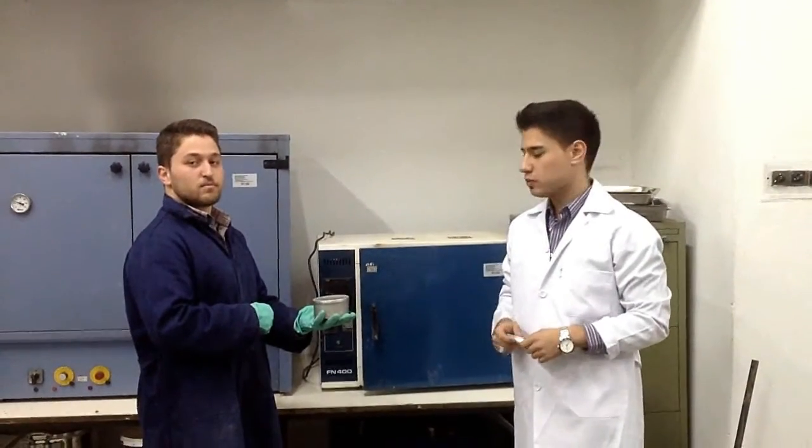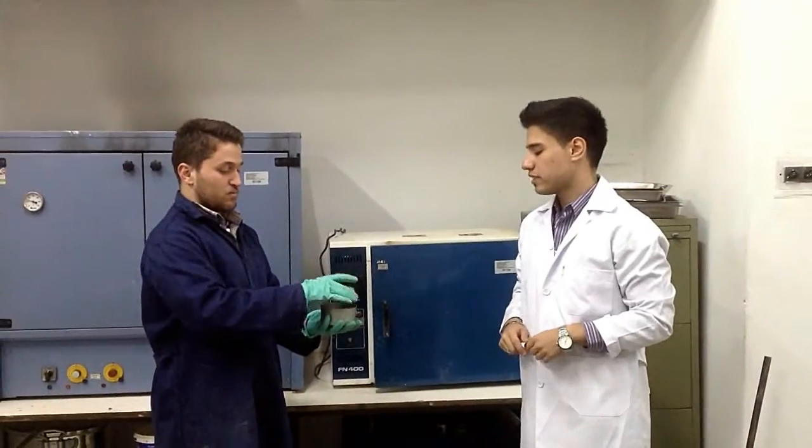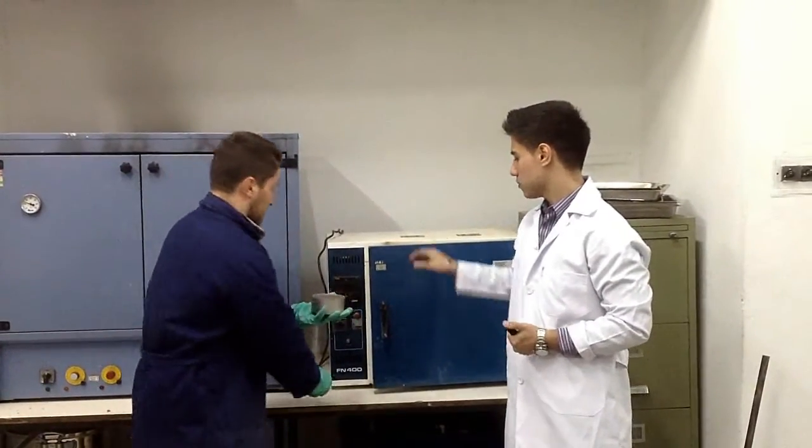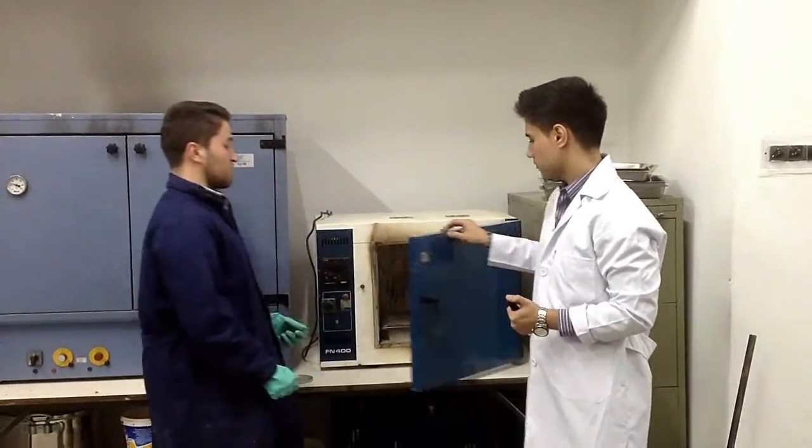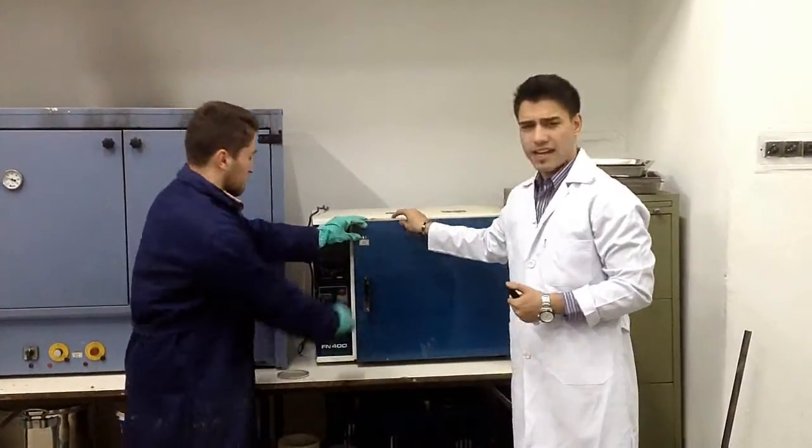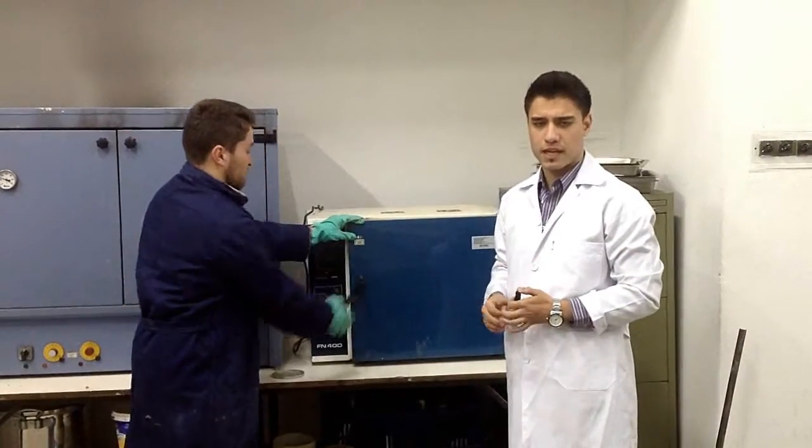The next step after that will be to remove the cap from the top and place the can inside the oven. It takes about 24 hours to obtain a constant weight, so we have to wait that long.